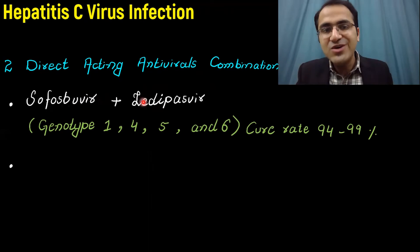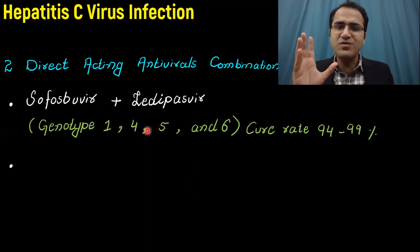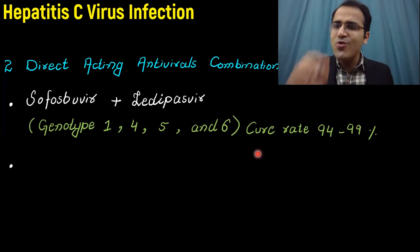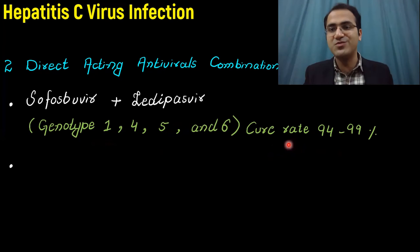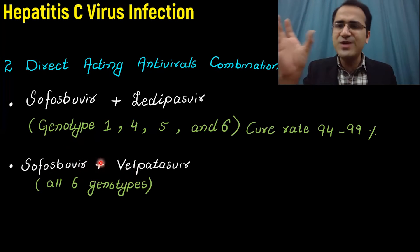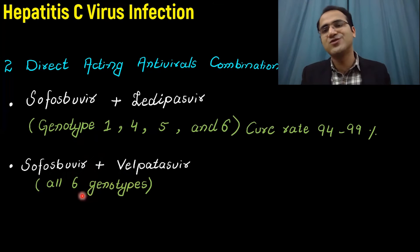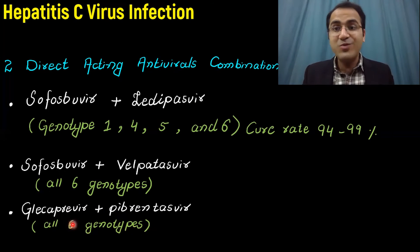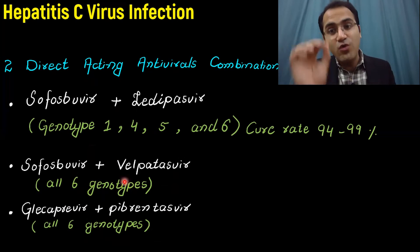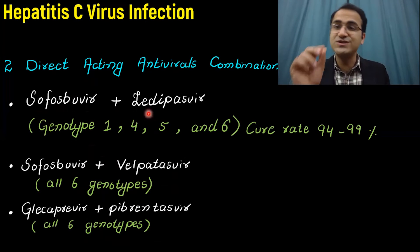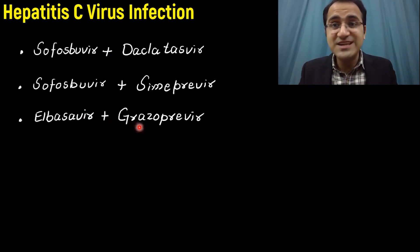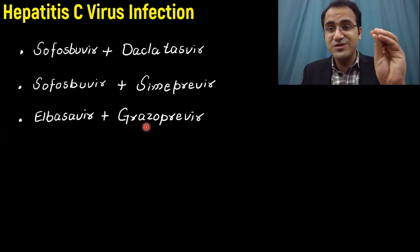Direct-acting antiviral combinations are used. Sofosbuvir is the main drug. Sofosbuvir plus ledipasvir is the most important combination, effective against genotypes 1, 4, 5, and 6, with a cure rate of 94–99%. Sofosbuvir plus velpatasvir is effective against all six genotypes. Glecaprevir plus pibrentasvir is another combination effective against all six genotypes. Other combinations include sofosbuvir plus daclatasvir, sofosbuvir plus simeprevir, and elbasvir plus grazoprevir.